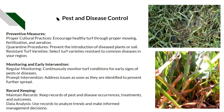Encourage turf growth through proper mowing, fertilization, and aeration. Quarantine procedures include washing the mower before moving between areas to prevent spreading diseases. You can also use turf varieties resistant to particular diseases or better suited to specific microclimates within a stadium. Continuously monitor turf conditions, address issues as soon as they're identified to prevent further spreading, and keep records of pests, diseases, treatments, and outcomes — this data analysis allows more informed management decisions based on trends.